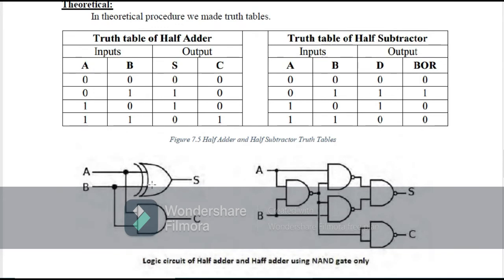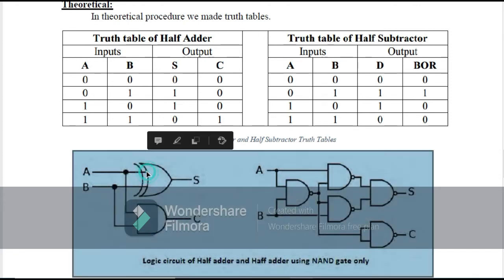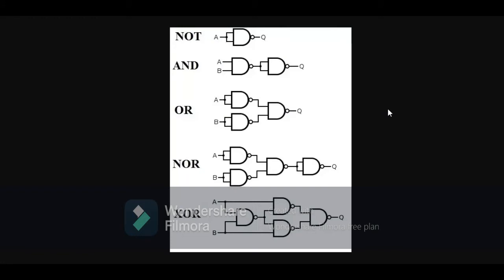Here you can see the circuit of the half adder and half subtractor. I have also implemented this circuit using only NAND gates, converting the XOR gate and AND gate into NAND gates. To convert the AND gate into NAND gates, we use 2 NAND gates: the first takes inputs A and B, and its output feeds into the second NAND gate. To convert the XOR gate into NAND gates, we use 4 NAND gates.